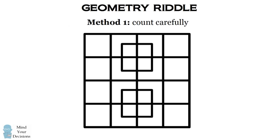One way to solve this problem is by counting the number of squares very carefully. We'll remove the two squares that are in the middle to be left with a 4x4 grid.